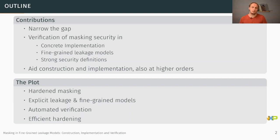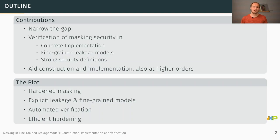In this presentation I will briefly go into hardened masking, then explain how we make verification with fine-grained leakage models possible and automate the verification aspects. Finally, I'll show how in our case study we efficiently hardened the PRESENT S-box and explored many optimization strategies, achieving a second-order implementation that was as fast in number of cycles as the naive first-order composition approach — essentially gaining a full security order for free.